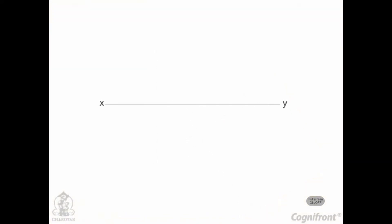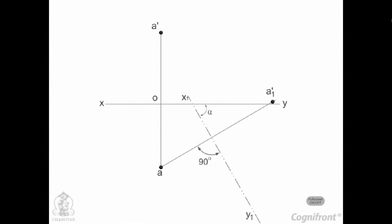To draw the orthographic views, start with the reference line XY and mark the front view A dash and the top view A. Draw a new reference line X1, Y1 making the angle alpha with XY. Through the top view A, draw a projector A, A dash 1 perpendicular to and intersecting X1, Y1 at O1, such that A dash 1 O1 is equal to A dash O.